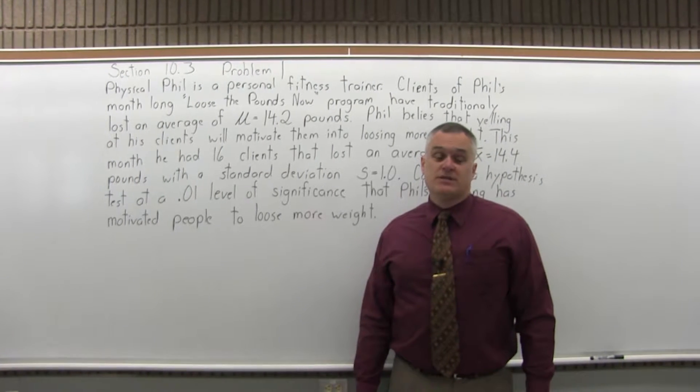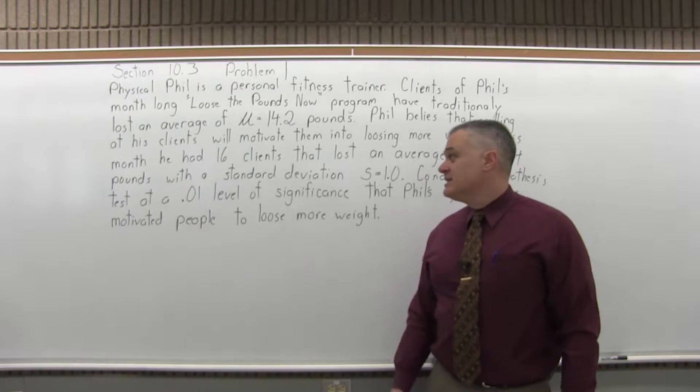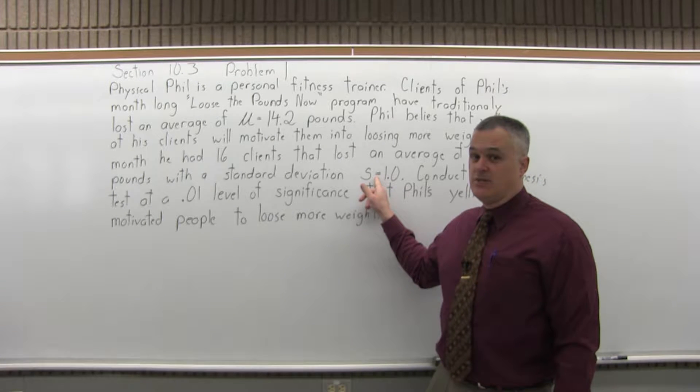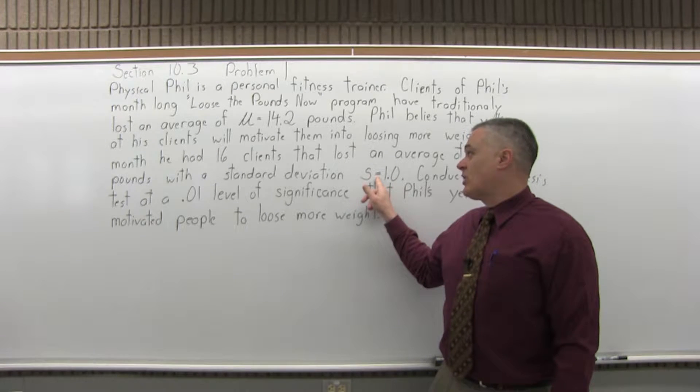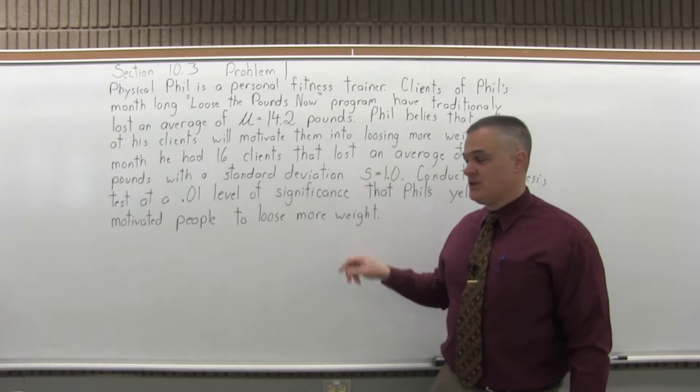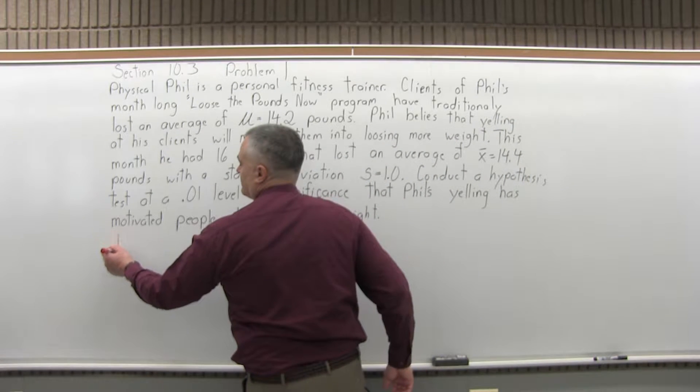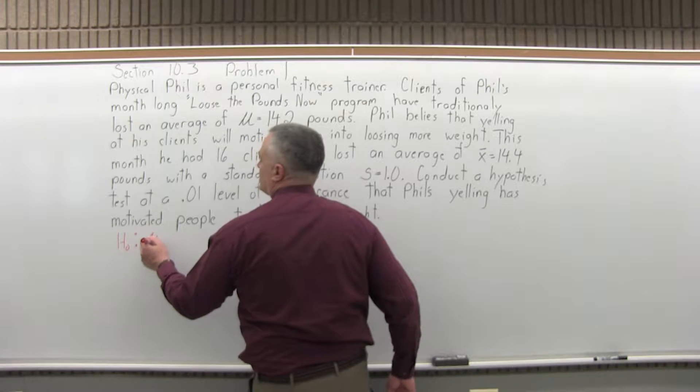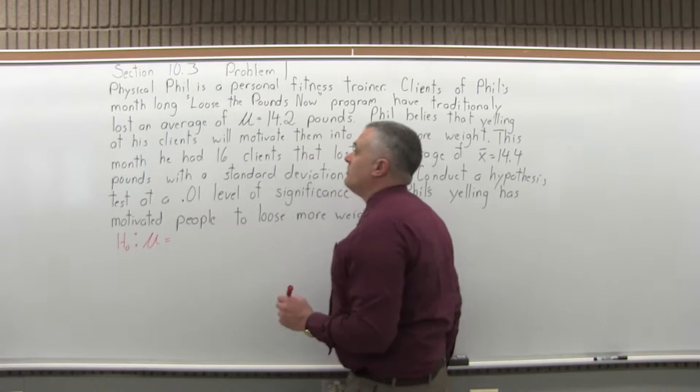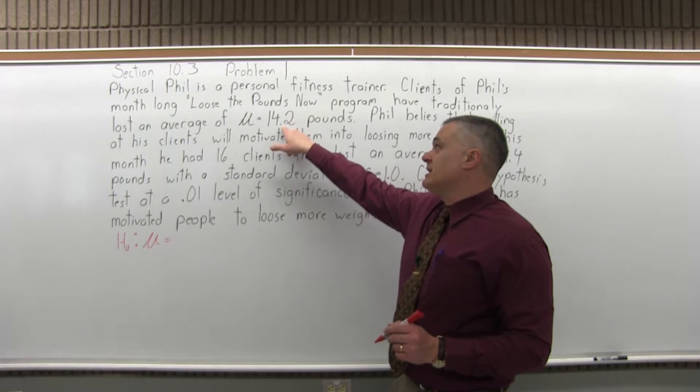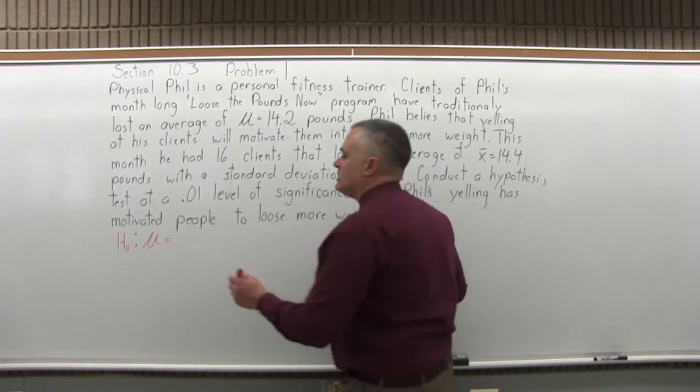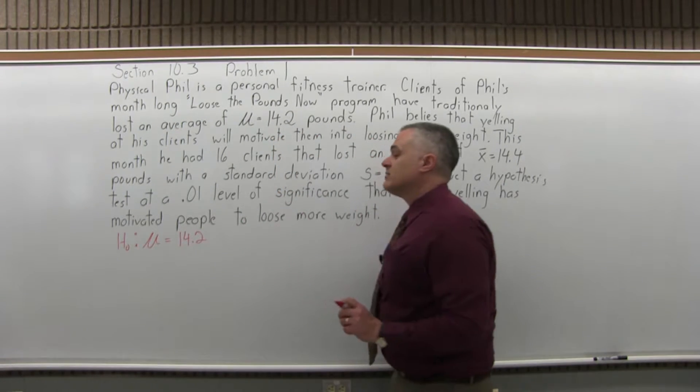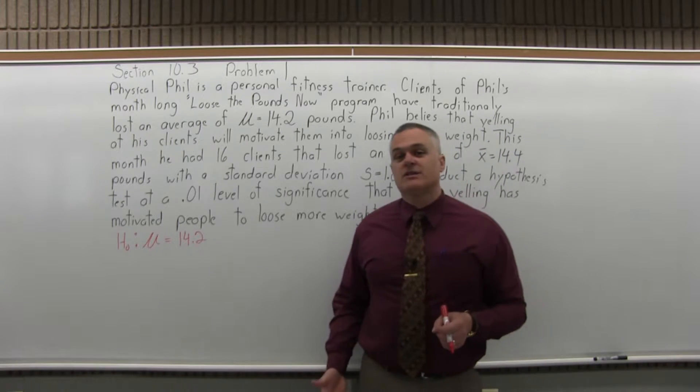So this is a hypothesis test. There's a six-step process. In this particular type of problem, we don't know the population standard deviation. We have to base our process on the sample standard deviation. Step one is state the null hypothesis. The null hypothesis will contain some condition of equality for mu. That condition of equality is 14.2 pounds. So the null hypothesis will either have an equal to, a greater than or equal to, or possibly a less than or equal to. But it will have the condition of equality somehow.